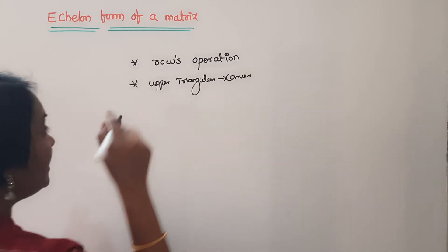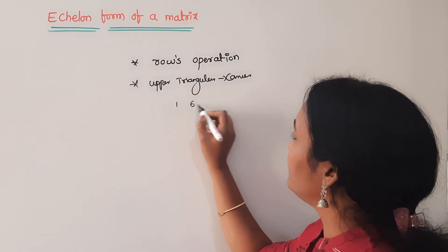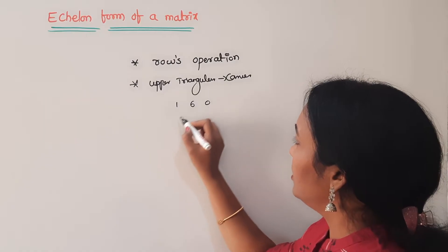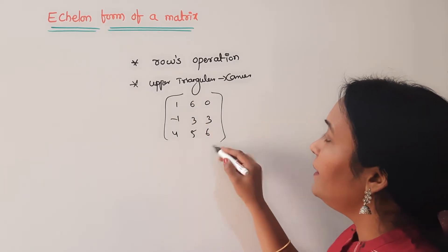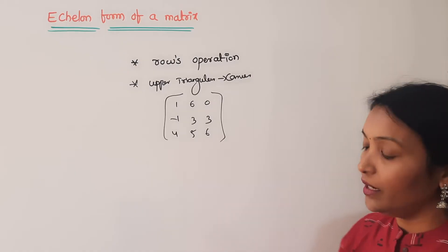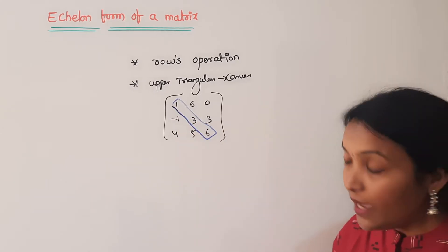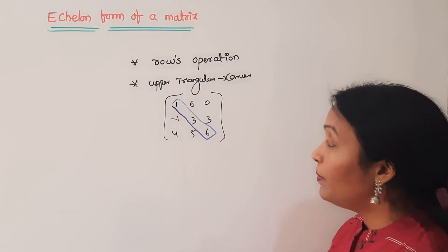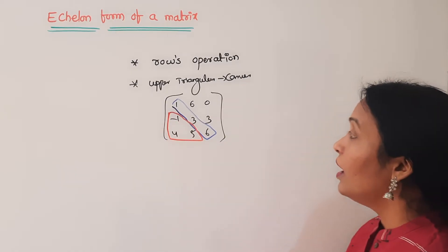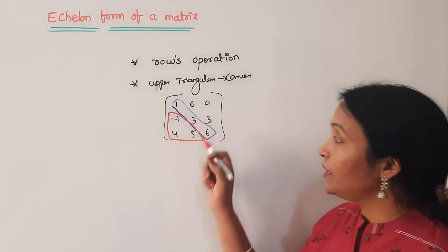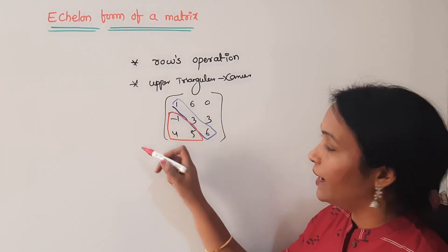Here the matrix is of order 3 by 3 or 4 by 4. What are the principal diagonal elements? Here we have the first element, second element, and third element on the principal diagonal. Below the principal diagonal, we have zeros, using row operations. This gives us the upper triangular form.